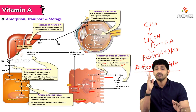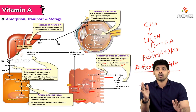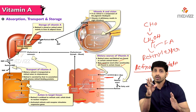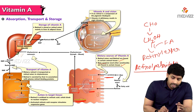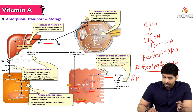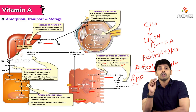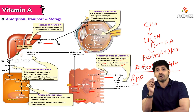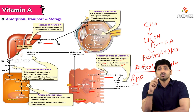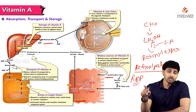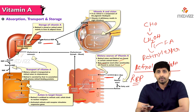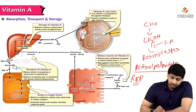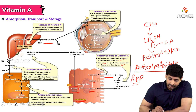Since vitamin A's main function is vision, it needs to reach the retina of the eye where visual pigment rhodopsin is made — in the rod cells and cone cells. The alcohol form must be converted to the aldehyde form to reach the retina. There is a protein called Retinol Binding Protein (RBP) which helps in transportation of retinol palmitate from the liver to the retina of the eye. Once it reaches the retina, RBP separates and returns to the liver to carry another retinol palmitate.